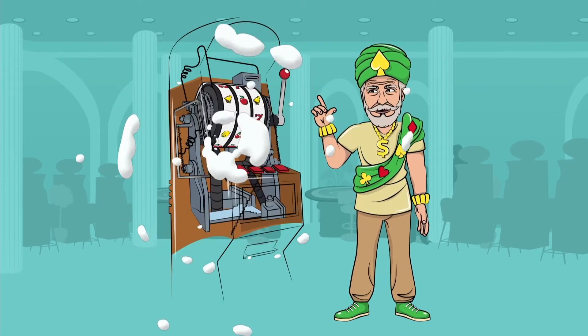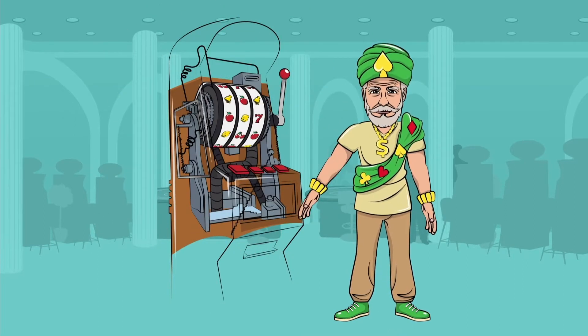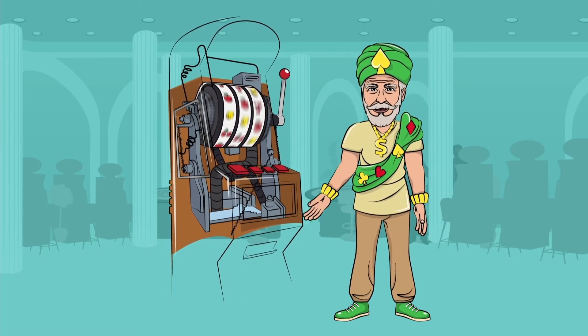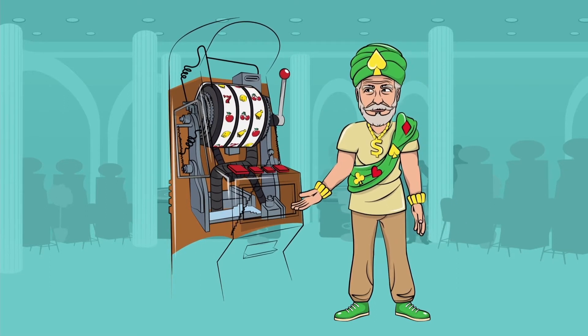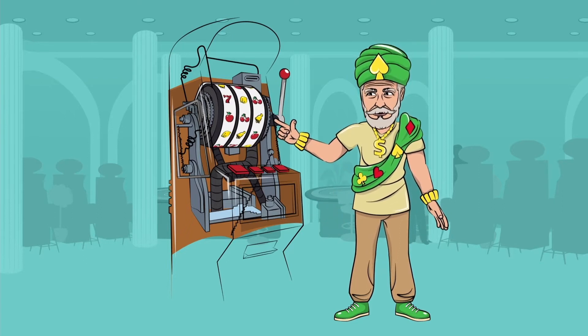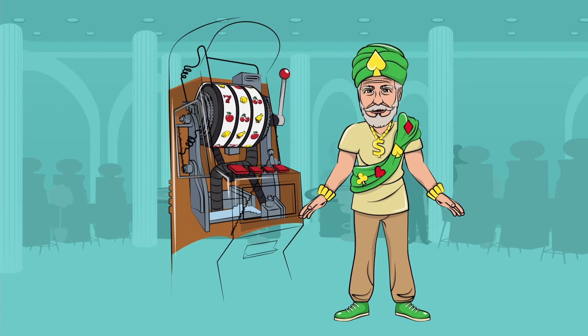In the days of slot machines with physical spinning reels, randomness was generated mechanically. The reels were spun and they mechanically stopped at random positions. The math of the game was decided by the positions of symbols on the wheels and the payout table.